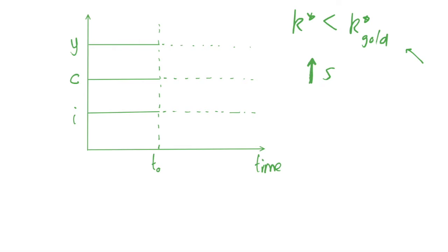What does increasing the savings rate do in the short term? This means we're spending a higher fraction of our income on savings, so this decreases consumption in the short run. But in the long run we'll be maximizing consumption because we're at the golden rule steady state — and that is exactly what the golden rule steady state means.